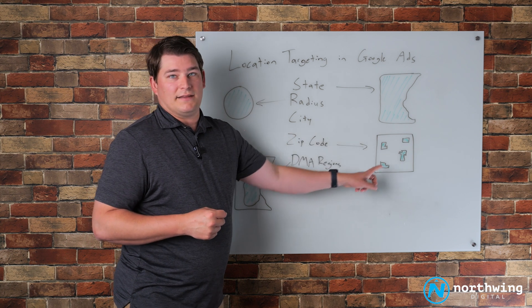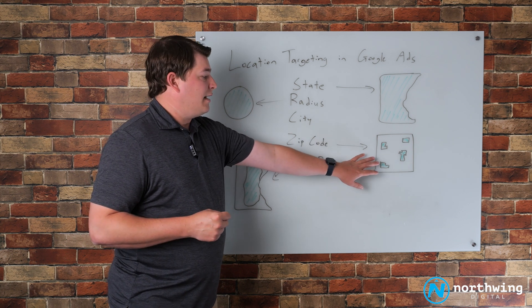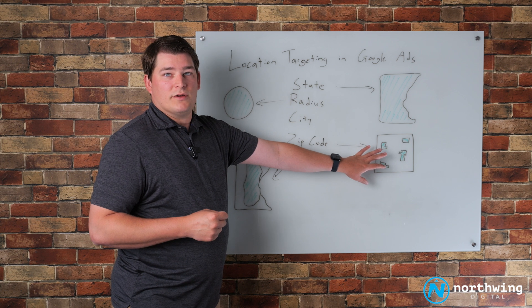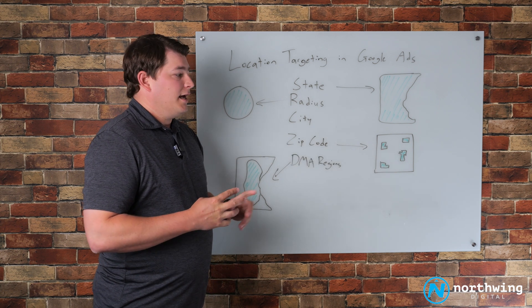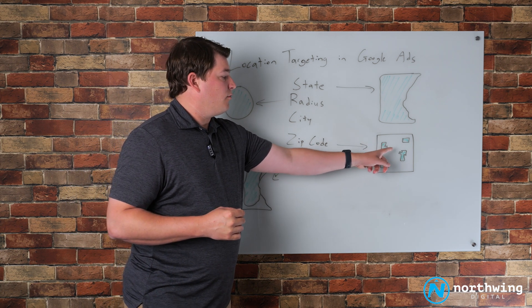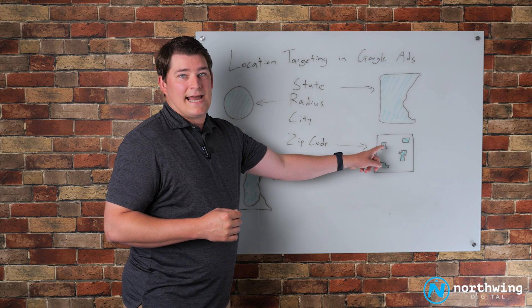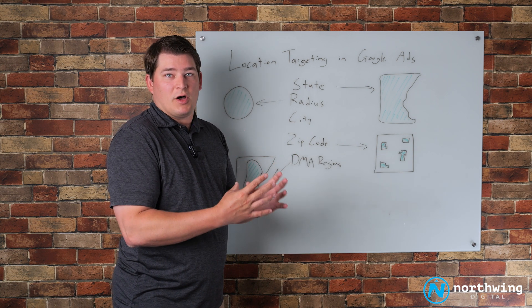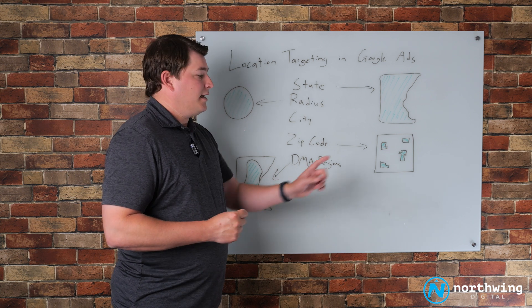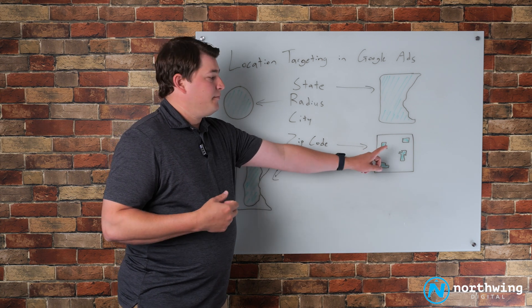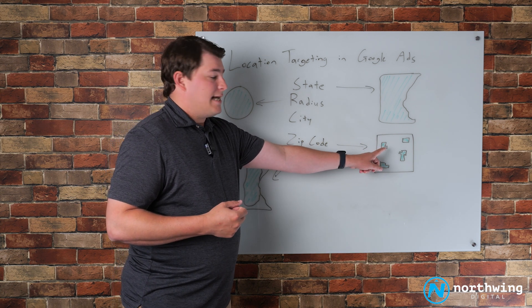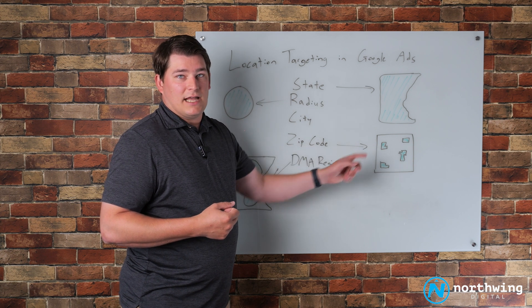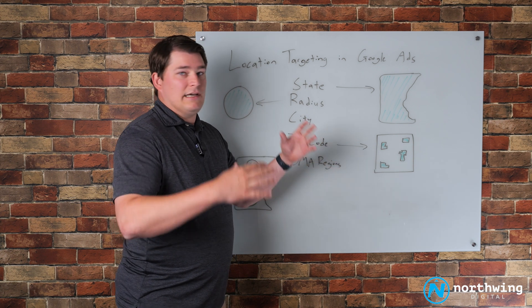...oftentimes you get this patchwork look to the locations that you're targeting. And what this is telling Google is we'll only target a user when they're in that exact zip code. In a lot of metro areas where the zip codes are very small because of population density, it can be hard, in our opinion, for Google to match up exactly users that are in that allowable area for the location.